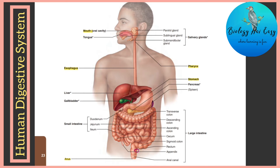In the human body, the left and right sides of the abdominal cavity can be identified clearly. The stomach is situated on the left portion of the abdominal cavity.